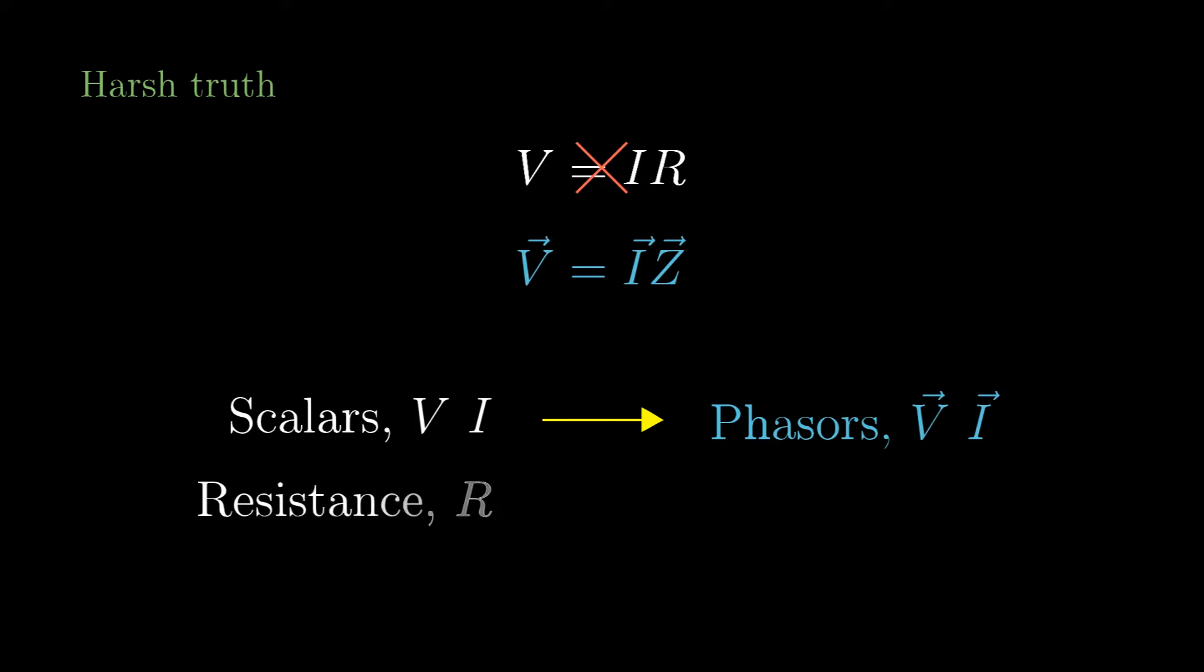Your DC surrogates teacher wasn't entirely honest with you. You thought voltages and currents were scalars, or just numbers, and that Ohm's law looked like this. But a more complete picture of Ohm's law looks like this. Here we treat the values of voltages and currents as vectors, which we'll call phasers, and we treat the resistance as only one component of a vector, called impedance.